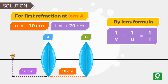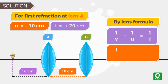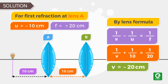On substituting the values of U and F we get 1 by V plus 1 by 10 equal to 1 by 20. Solving this gives the value of V equal to minus 20 centimeters.